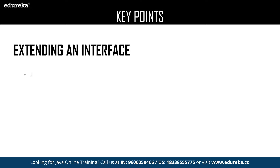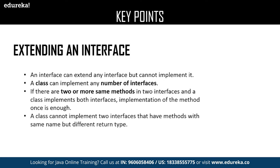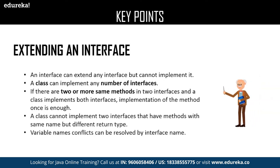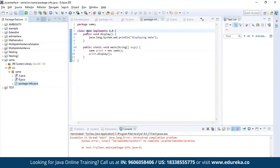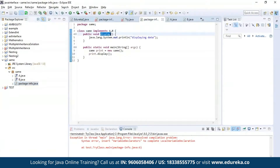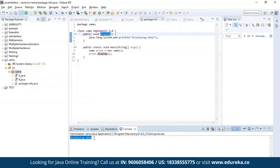The next key point is extending an interface. An interface can extend any number of interfaces but cannot implement them, whereas a class can implement any number of interfaces. If two interfaces have methods with the same name, the class can implement both but one single method is enough. A class cannot implement two interfaces that have methods with the same name but different return types. Here I have defined interface A and interface B, both with a display method, and class same implements both. The program runs successfully, displaying the output.